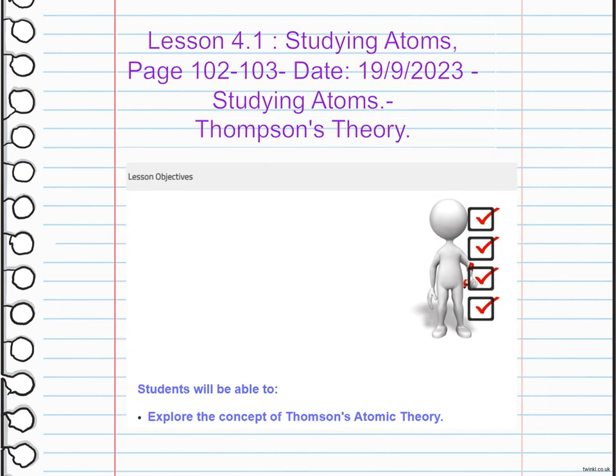Thomson's atomic theory, proposed by J.J. Thomson in the late 19th century, introduced the concept of the electron. He suggested that atoms are made up of positively charged matter with negatively charged electrons embedded within it.